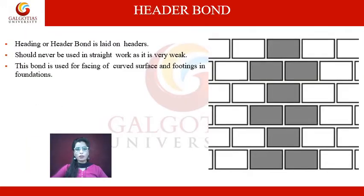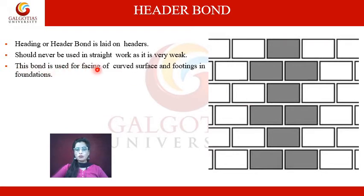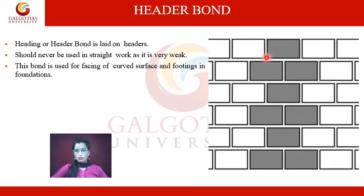Header bond: the shorter side of the brick is known as the header. Heading or header bond is laid entirely on headers. It should never be used in straight work as it is very weak. This bond is used for facing or curved surfaces and for footing in foundations, because it is weak in straight walls. In the image you can see the header side of the brick, which is why it is called header bond.